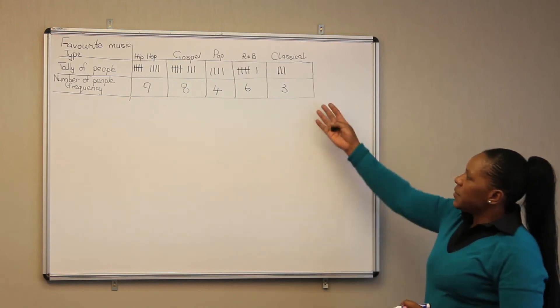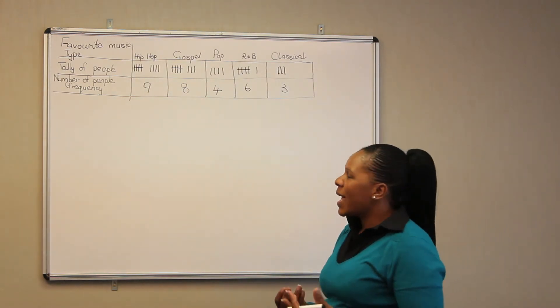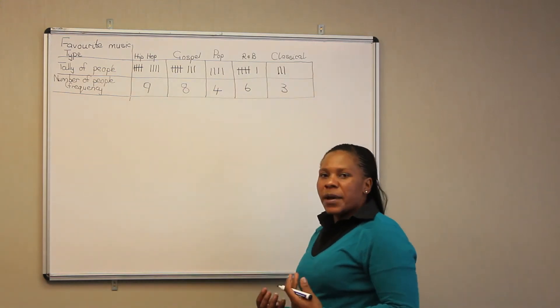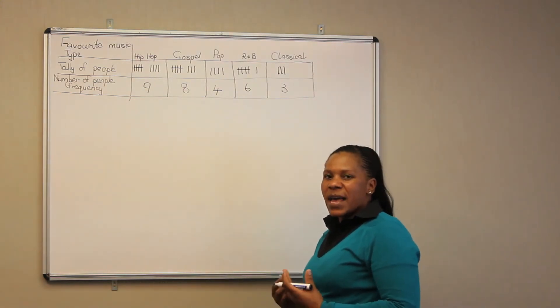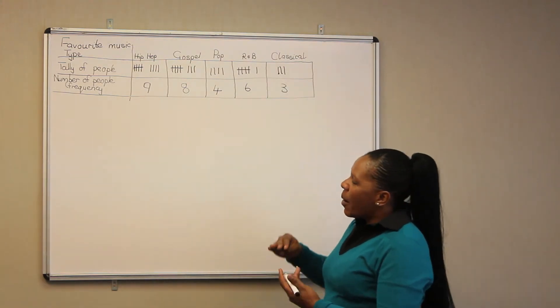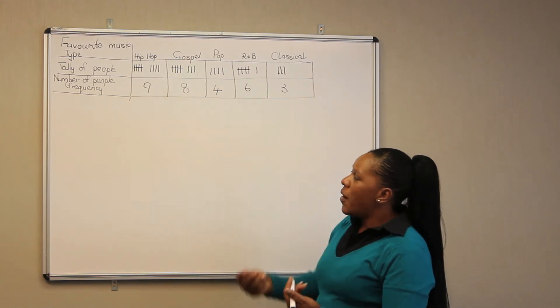So this information is going to help us to draw a biograph. First thing that we have to look at is which one is our highest frequency. In this case, our highest frequency is nine. So our biograph should go up to nine.